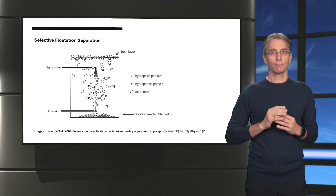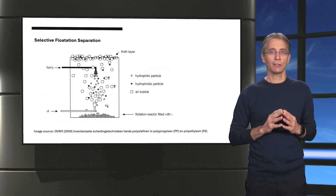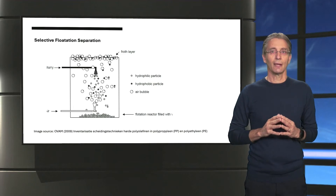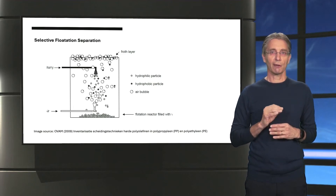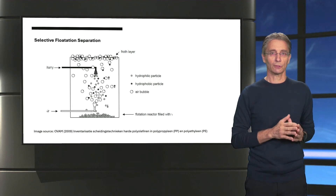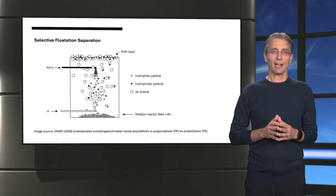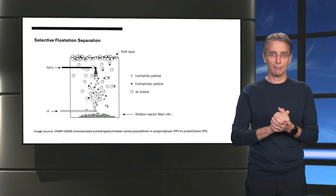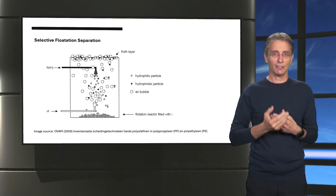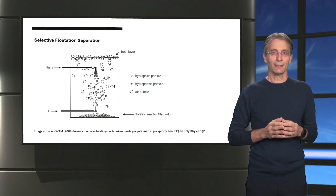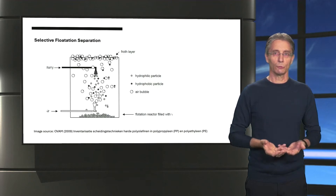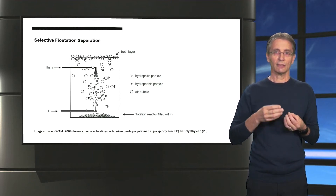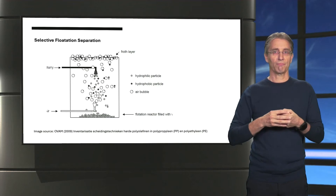A promising, but not yet widely used method is called selective flotation separation. It makes use of the difference in hydrophobicity between polymers. Before the polymers enter the flotation bath, the particles undergo a surface treatment that selectively changes their wettability. This means that when air bubbles are introduced from the bottom of the flotation bath, they will attach to the more hydrophobic polymer fragments.